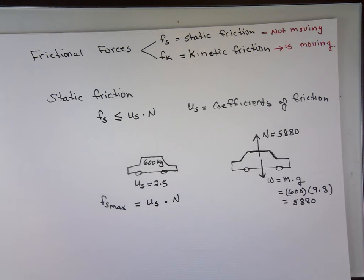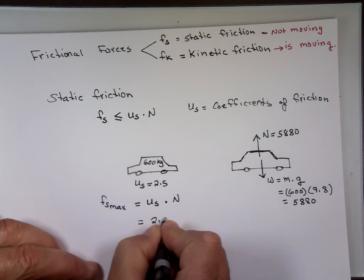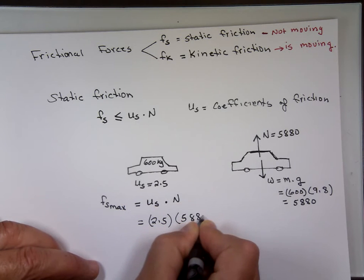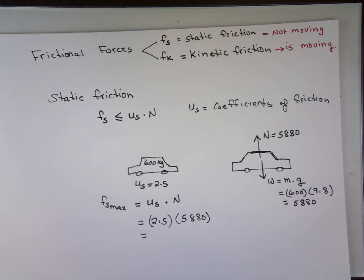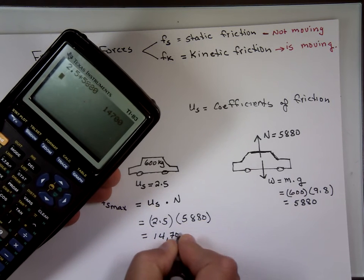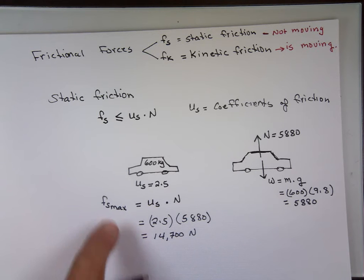So the maximum static friction is 2.5 times 5,880, which means I need 14,700 Newtons to get the car to move. That's the maximum static friction.